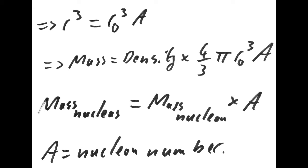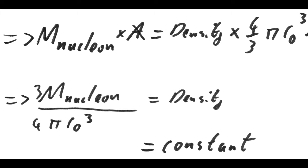Rearranging this equation means we can remove the nuclear number from our equation for density, and say that the density of a nucleus equals 3 times the mass of a proton or neutron, divided by 4 pi times the radius of a proton or neutron cubed.